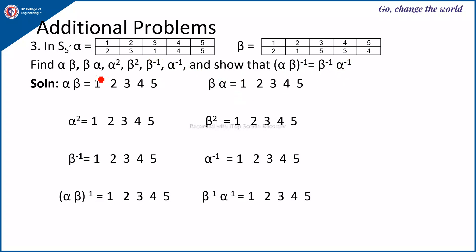To compute alpha beta, we start from alpha and then apply beta. For element 1: in alpha, 1 goes to 2, and in beta, 2 goes to 1 — so 1 goes to 1. For element 2: in alpha, 2 goes to 3, and in beta, 3 goes to 5 — so 2 goes to 5.